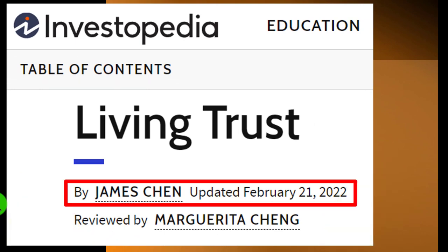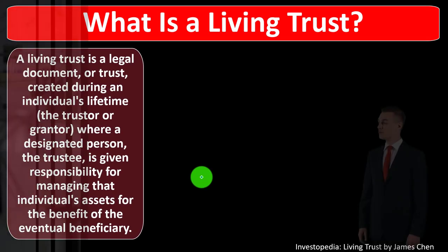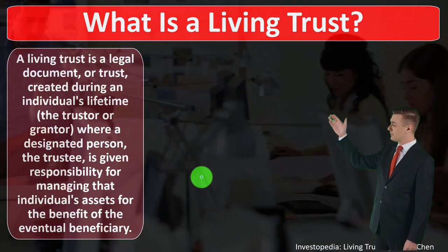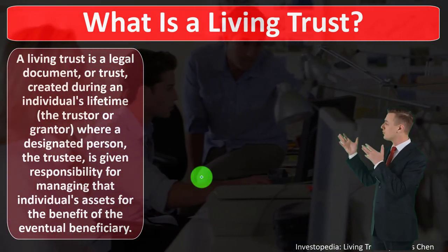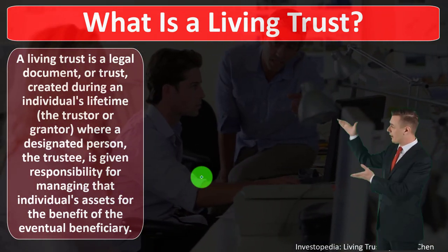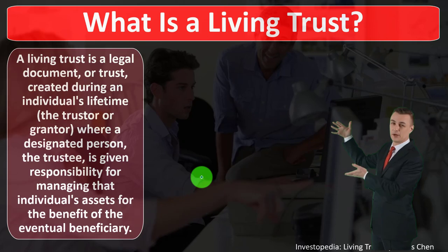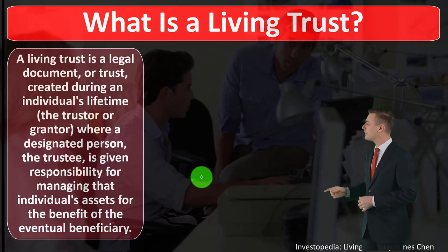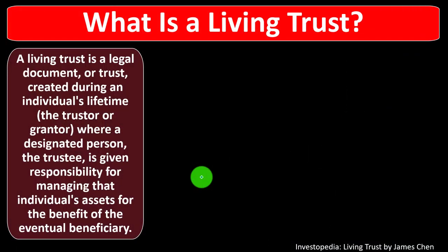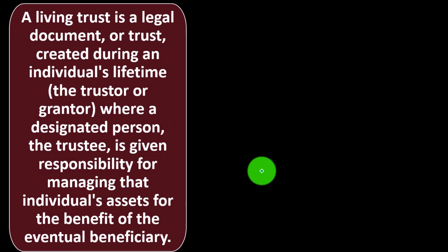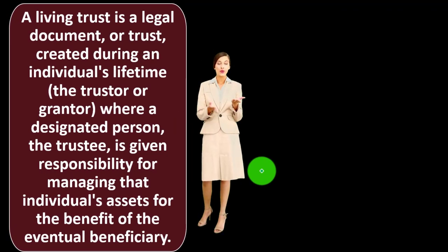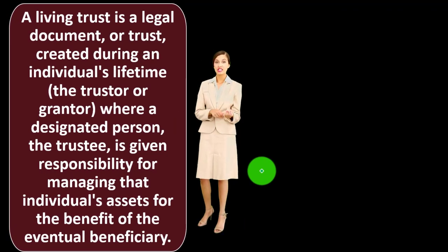This article is by James Chan, updated February 21st, 2022. In prior presentations we've been taking a look at retirement planning, then estate planning, and now looking at components often used in estate planning — this time, the living trust. First question: what is a living trust? A living trust is a legal document or trust created during an individual's lifetime.